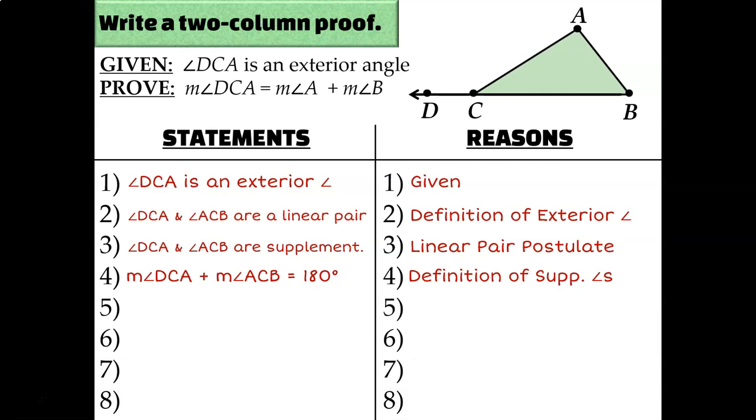And we learned in our previous lesson that the sum of the interior angles of a triangle is always equal to 180. So let's write that down. The measure of angle A plus the measure of angle B plus the measure of angle ACB equals 180 because of the triangle sum theorem.